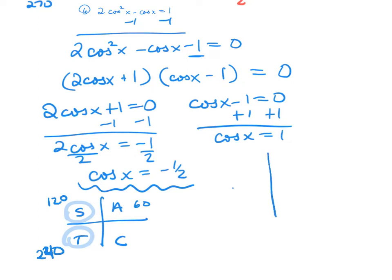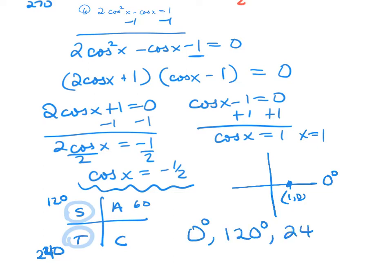The other factor gives cosine x equals 1, which comes from an axis point. I'm looking for x equal to 1 because cosine looks at x — that's the ordered pair at 0 degrees. So this one has three answers: 0 degrees, 120 degrees, and 240 degrees.